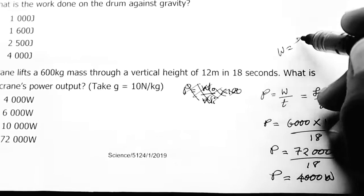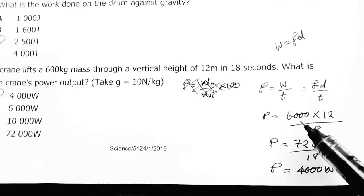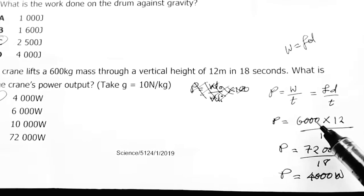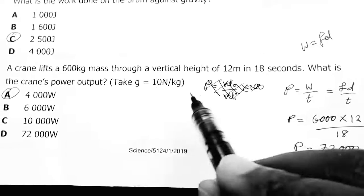So here, where it's supposed to be W, I put FD because work equals FD. Force is 6000, that is the weight of the object. The weight is mg, so this force is actually the weight, which is mg, because the lifting is vertical.